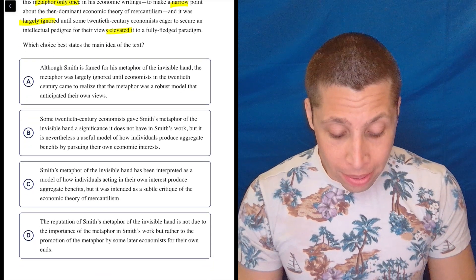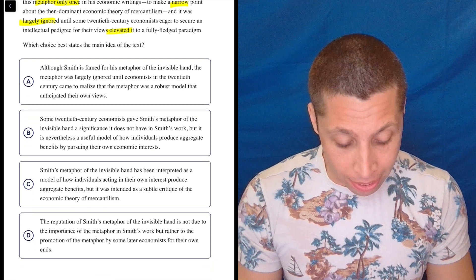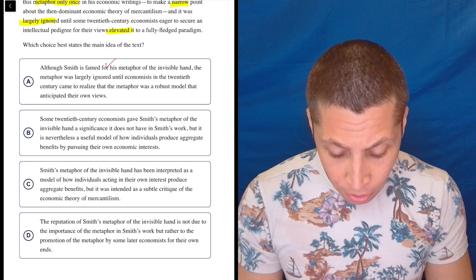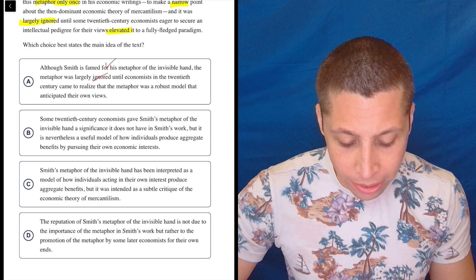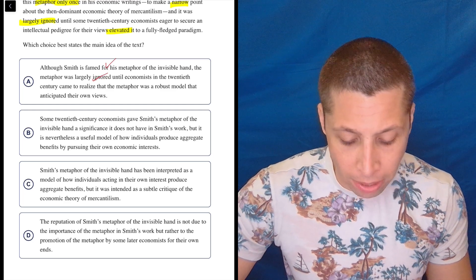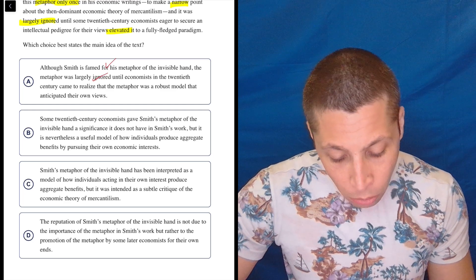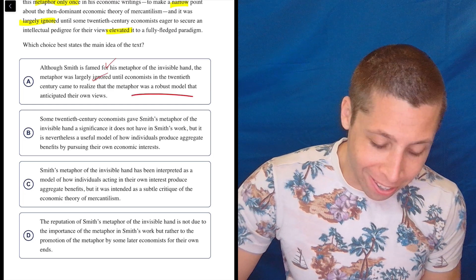So A, although Smith is famed for his metaphor of the invisible hand, the metaphor was largely ignored until economists in the 20th century came to realize that the metaphor was a robust model that anticipated their own views. So that, I know what they're doing there. This is what I might call a copy-paste trap.